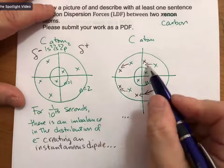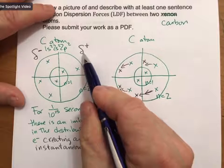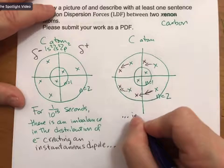That induces a dipole. And that's what it's doing. So these electrons are attracted to the partial plus, inducing a dipole.